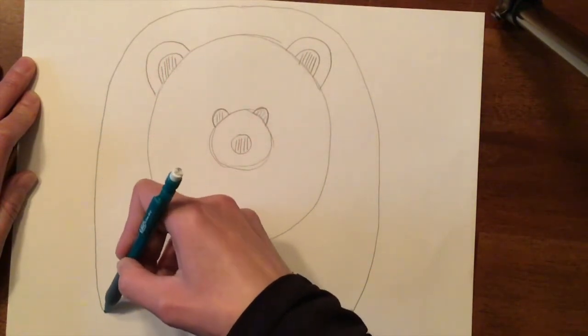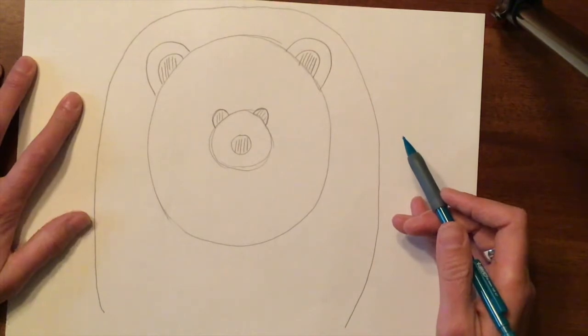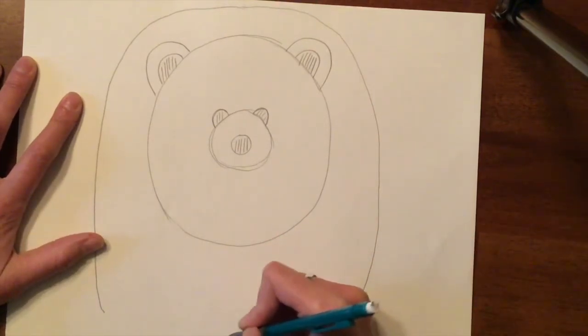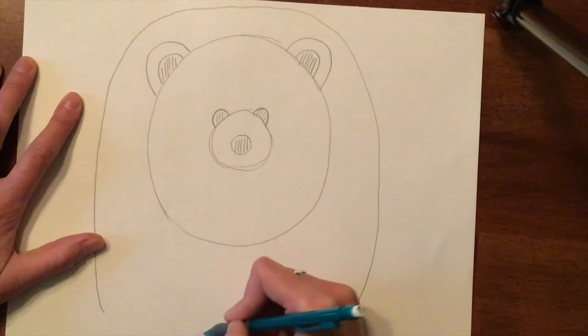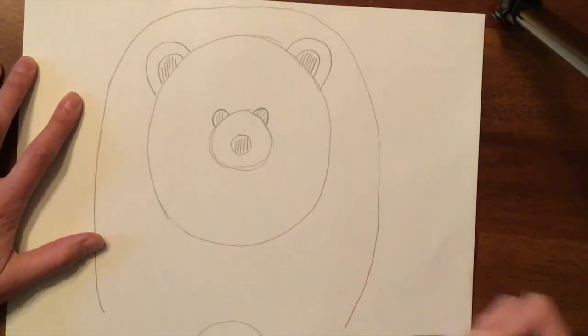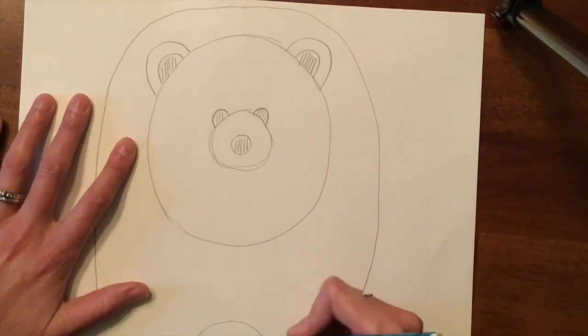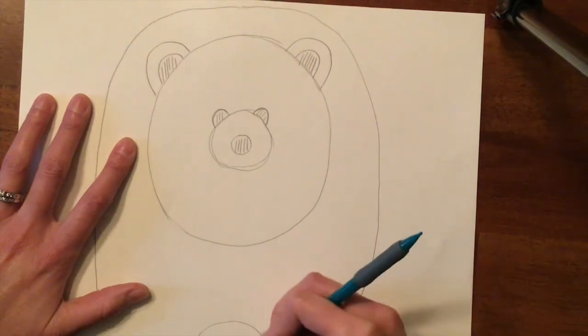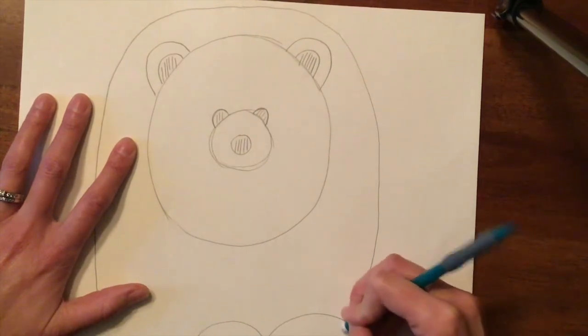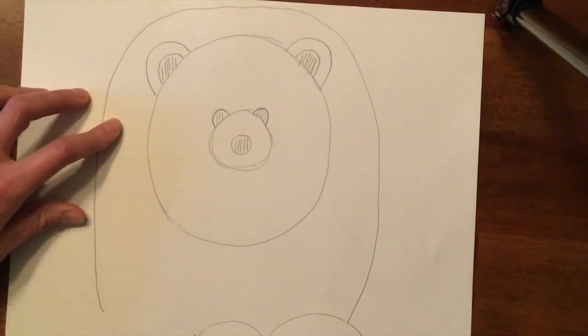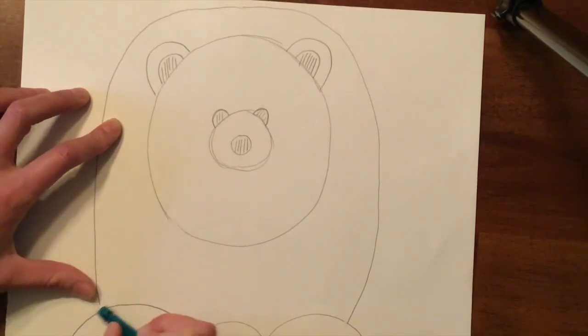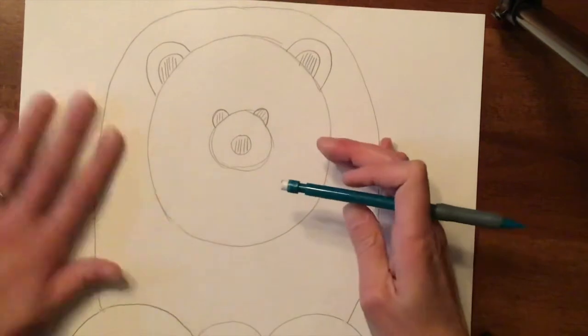Okay. Now in the middle here, down at the bottom, I'm going to make another half circle like that. And then I am going to make my bear's feet by using another half circle. So like that and erase the extra and like this and erase the extra. So now it looks like that.